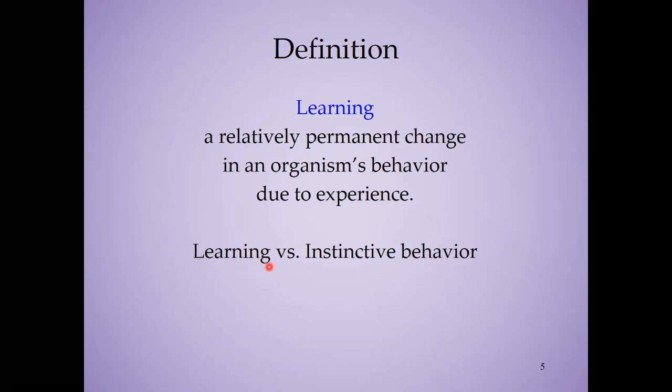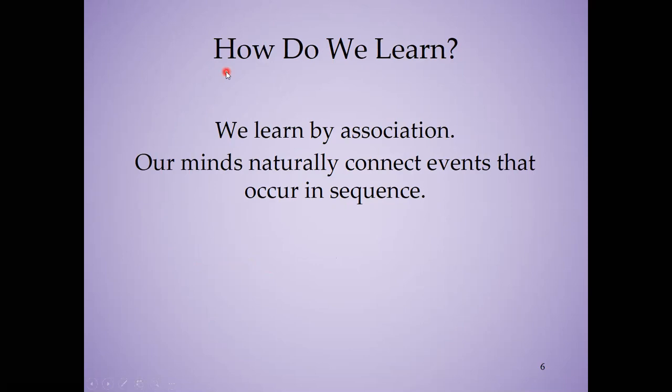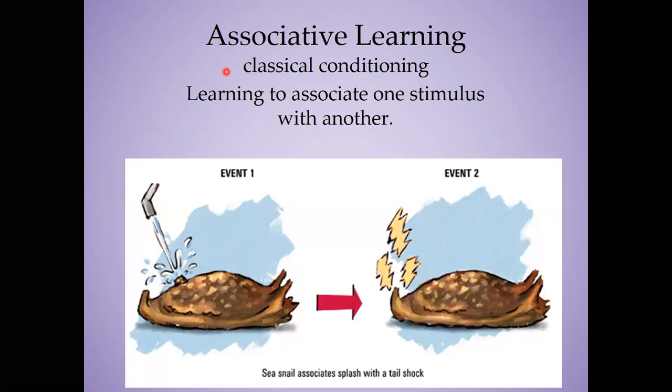How do we learn? Well, we learn primarily by association. Our brains are naturally geared to connect events that occur one after the other in sequence and associate those events with one another. This is called associative learning. We're going to touch on a couple types of it here. First, we have classical conditioning — which occurs when we have learned to associate one stimulus with another, or learned to associate one event with another event that follows it consistently.